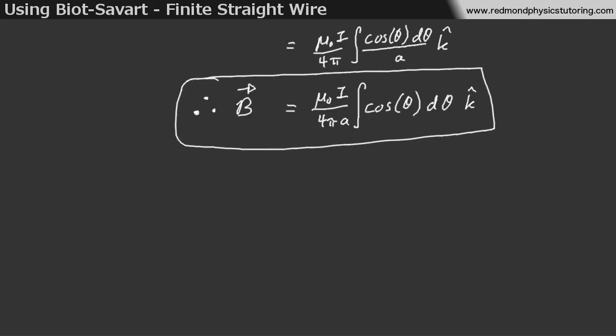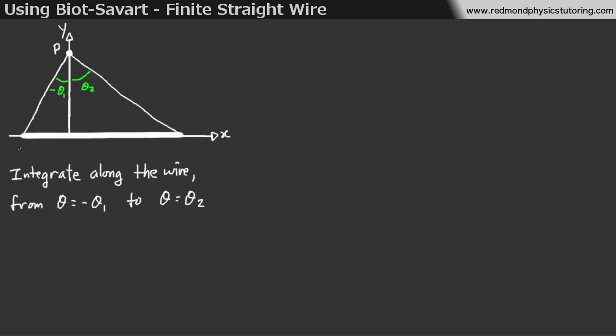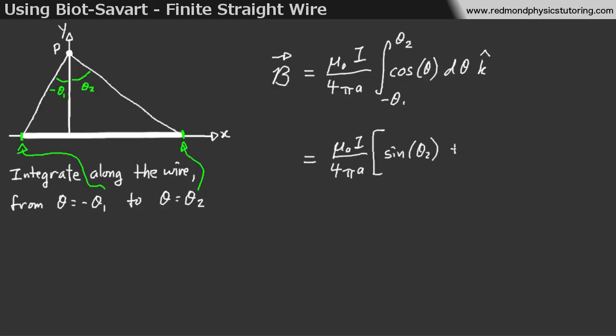Okay. Finally, all we have to do is take the integral. So, we can integrate along the wire from one end of the wire to the other from theta is equal to negative theta 1. So, we're using the y-axis as an origin for the angle theta. So, we're integrating then from theta equals negative theta 1 to theta is equal to theta 2, and the final result that we get is that the magnetic field is equal to mu naught i over 4 pi a times sine of theta 2 plus sine of theta 1, and in this example, it's in the direction of k-hat.